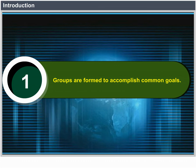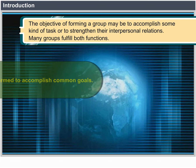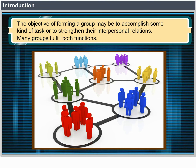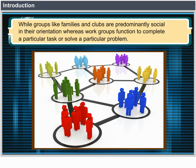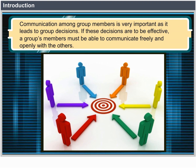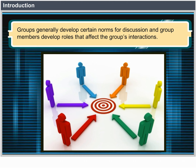Introduction. Groups are formed to accomplish common goals. The objective of forming a group may be to complete some kind of task or to strengthen interpersonal relations. Many groups fulfill both functions. While groups like families and clubs are predominantly social in their orientation, work groups function to complete a particular task or solve a particular problem. Communication among group members is very important as it leads to group decisions. If these decisions are to be effective, a group's members must be able to communicate freely and openly. Groups generally develop certain norms for discussion, and group members develop roles that affect the group's interactions.